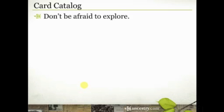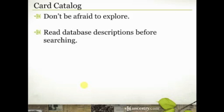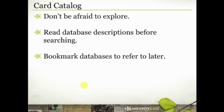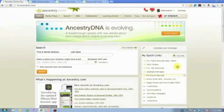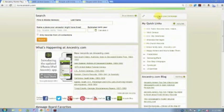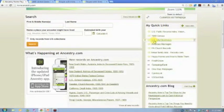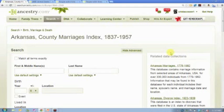Let me wrap up with a couple of tips before the big hint. Don't be afraid to explore — just go play with the card catalog and see what you can discover. Scroll down past the search box and read those database descriptions before you start searching. If you find a database you're interested in, bookmark it with your web browser. Or, like I've done, quick-link it on your homepage — I've added the US public records index, the 1940 census, US city directories, and that Arkansas marriages database as quick links so I can jump right to them.